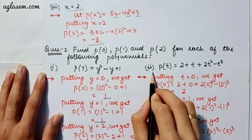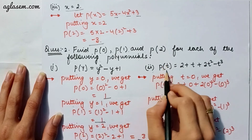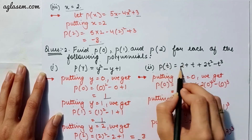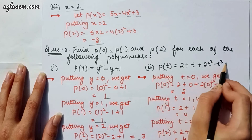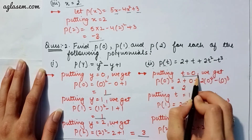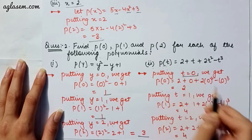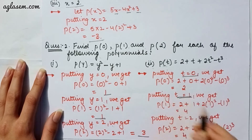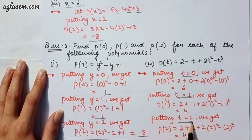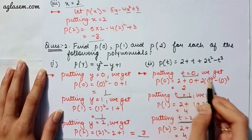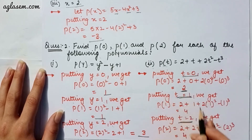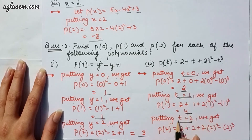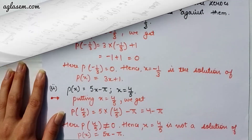Moving to the second part, which says p(t) = 2 + t + 2t² - t³. We put t = 0, t = 1, and t = 2 in turn. By putting t = 0 we get 2, by putting t = 1 we get 4, and by putting t = 2 we also get 4.